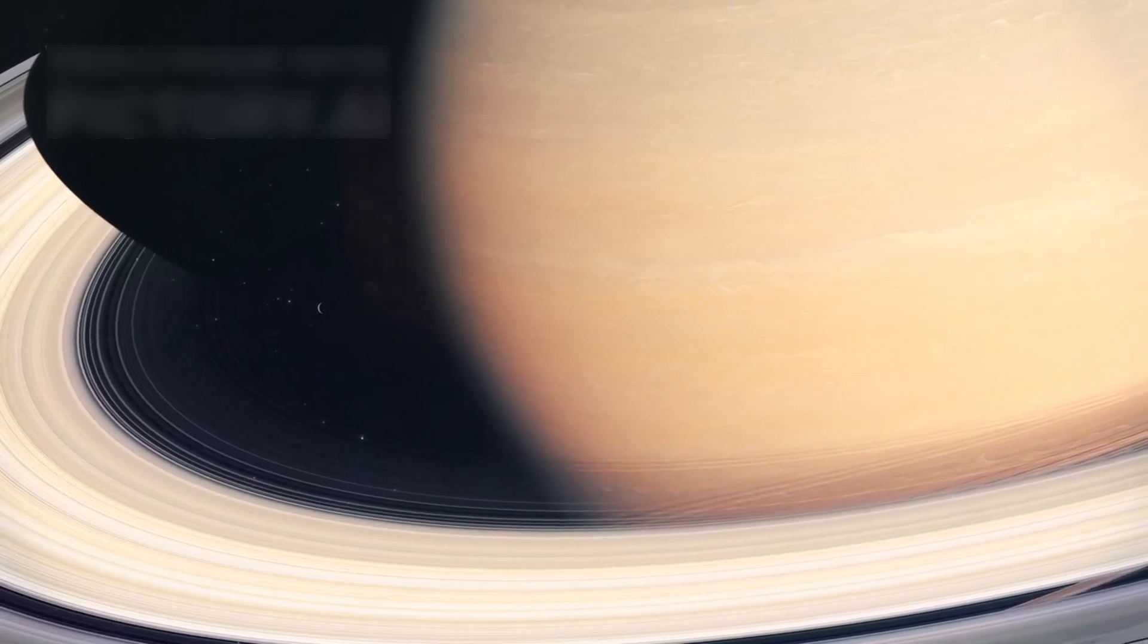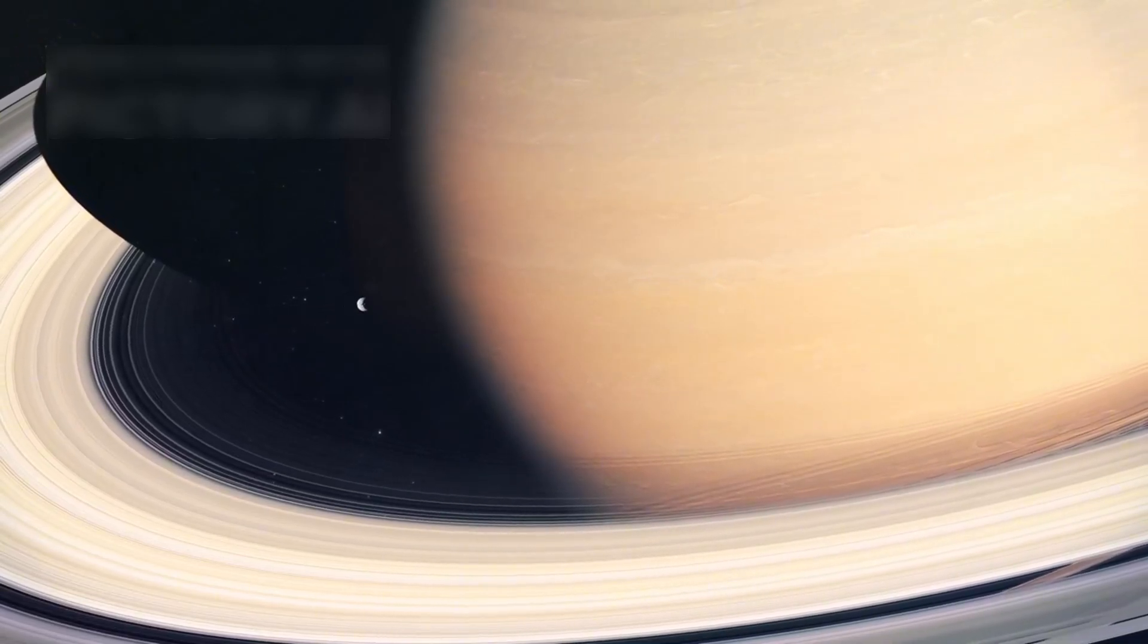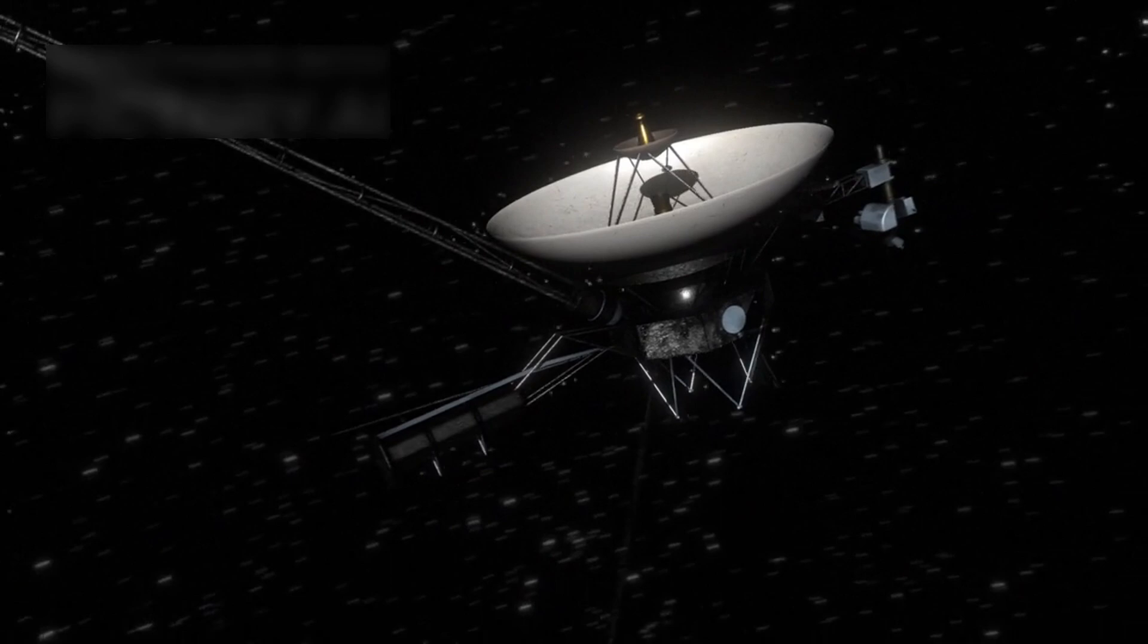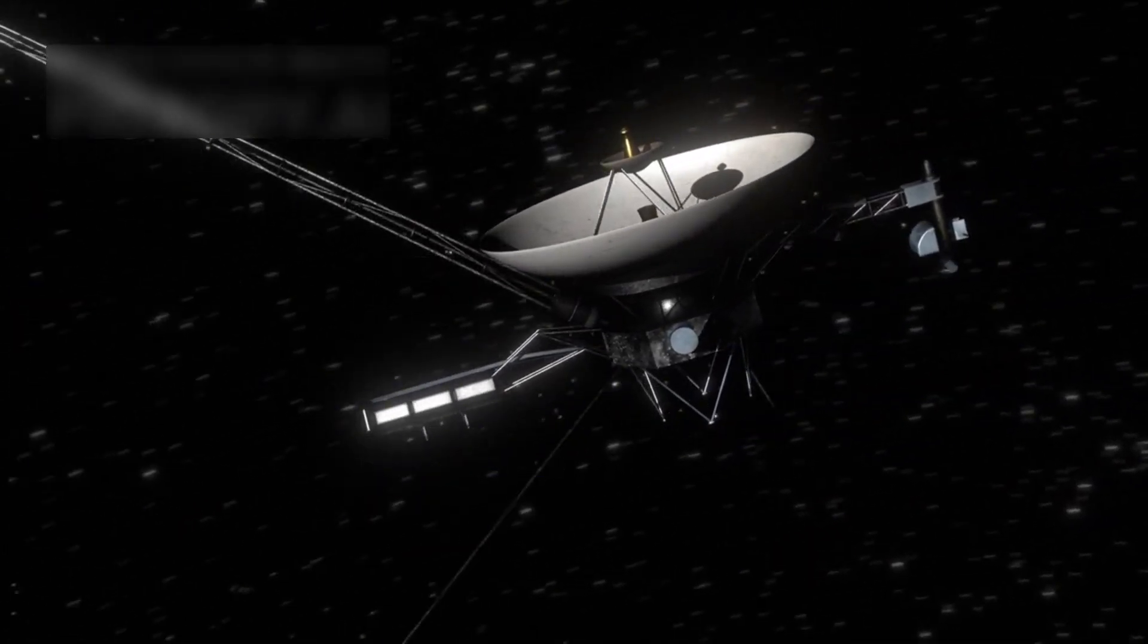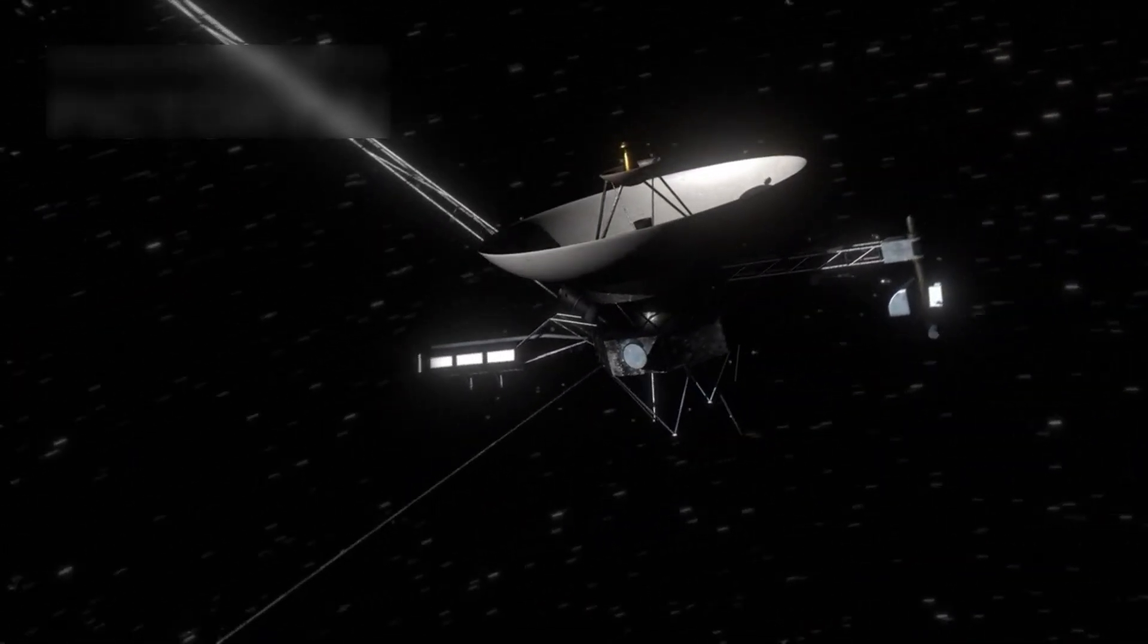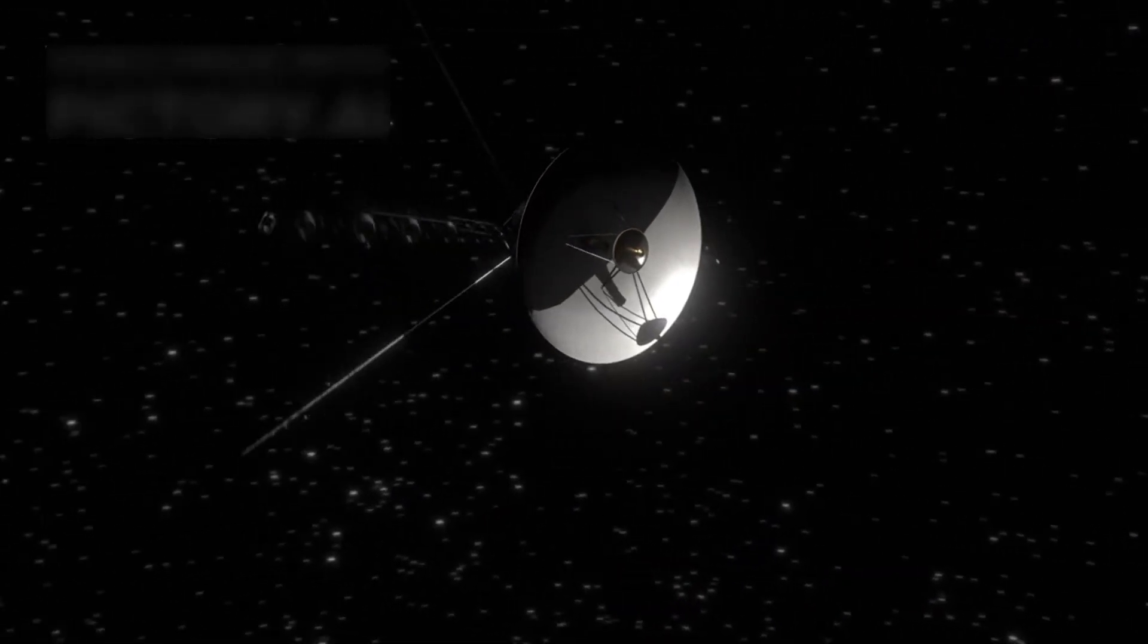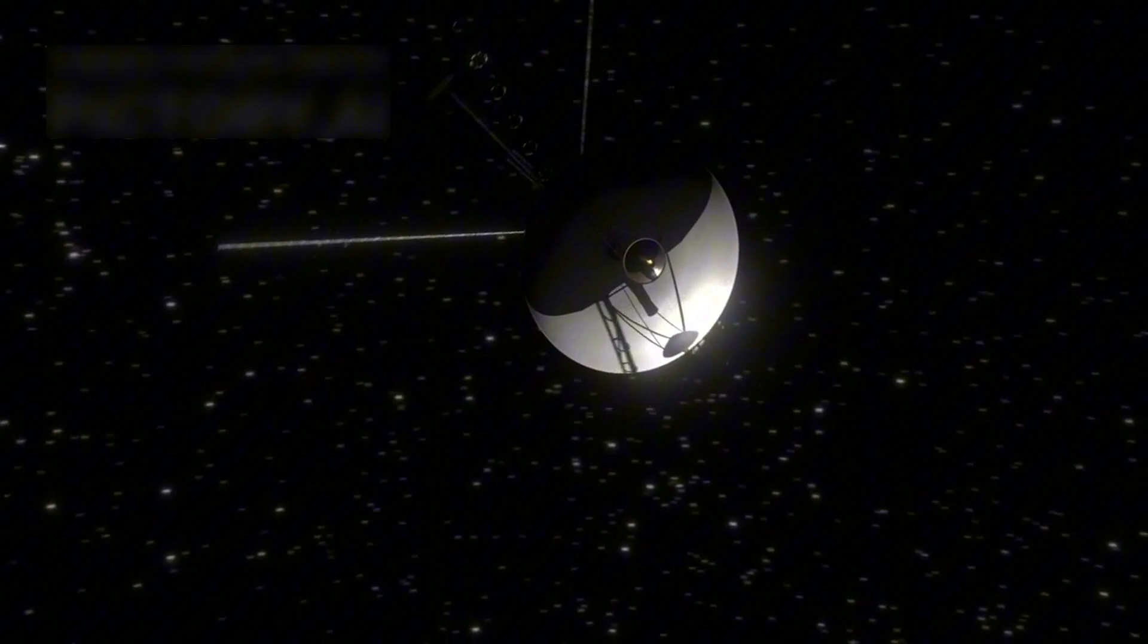What if the most groundbreaking image in human history didn't come from Hubble, James Webb, or Perseverance, but from an old probe? Voyager 1, now over 14 billion miles from Earth, has sent a new image from the edge of the solar system. No one expected this photograph from a probe launched 46 years ago to change the way we see the cosmos.